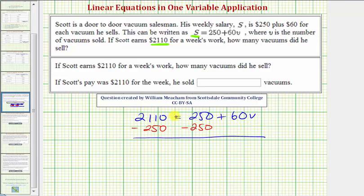2,110 minus 250 equals 1,860. On the right side, notice how this is zero, so we're left with just 60V.